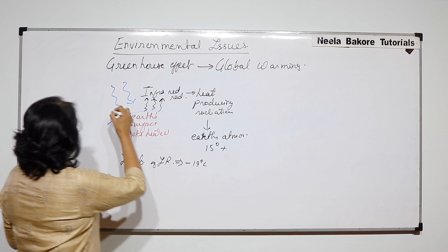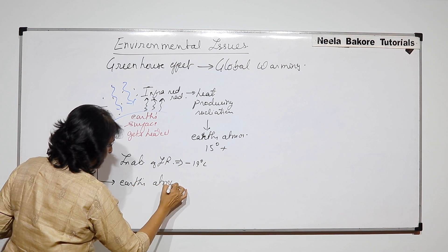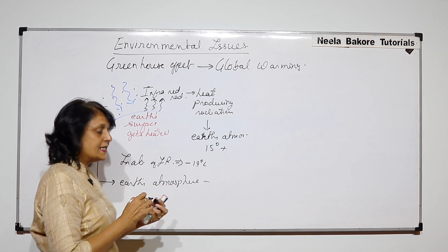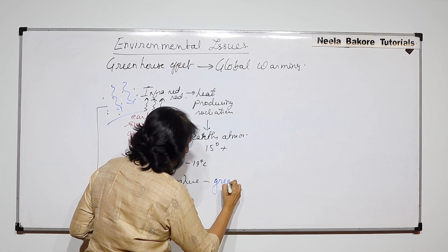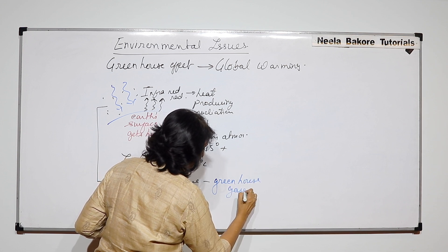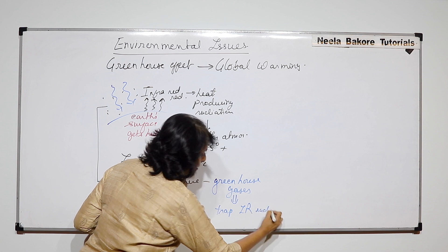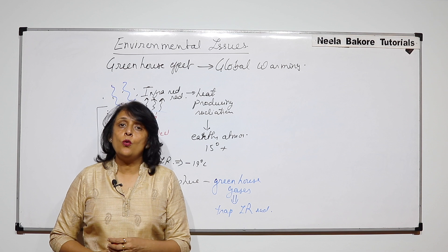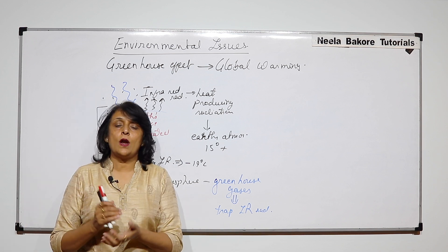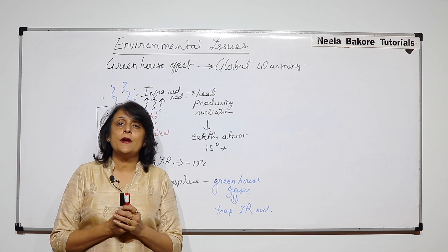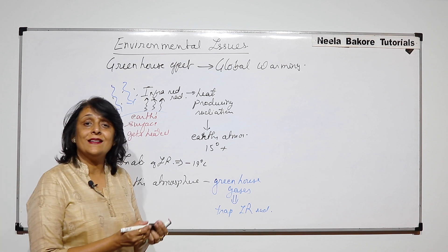In the earth's atmosphere, there are some gases that are able to trap infrared radiation. These gases are called greenhouse gases. What do they do? The greenhouse gases trap infrared radiations, so if the concentration or amount of these greenhouse gases increases in the earth's atmosphere, more and more infrared radiations would be trapped. If more infrared is trapped, the temperature of the earth's atmosphere is going to increase.